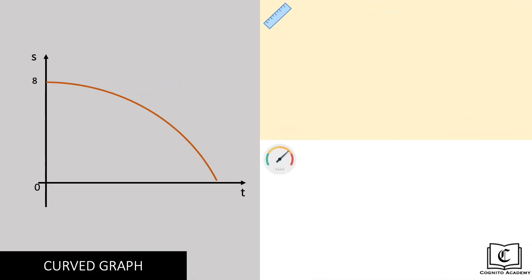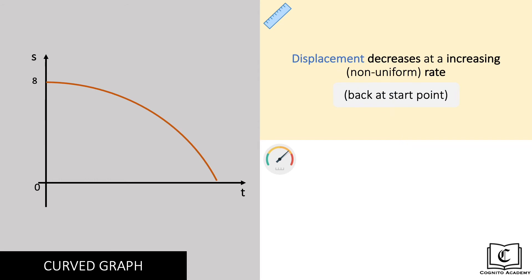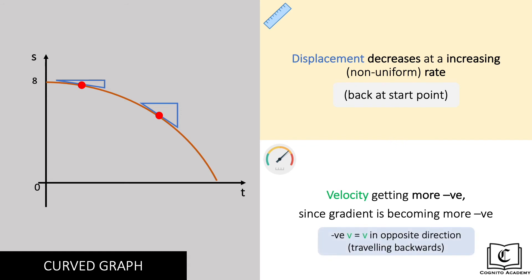Here, we see that displacement is decreasing from 8 to 0 meters at a non-uniform increasing rate, returning back to start point. Looking at the gradient, the gradient is pointing downwards and hence negative, and it is becoming steeper, meaning gradient is getting even more negative. Hence velocity is negative to begin with and getting more negative. A negative velocity means the object is travelling backwards.